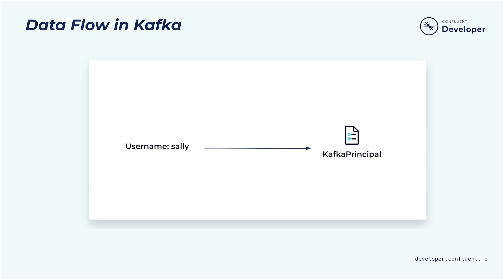Kafka uses principals to associate users with requests, even if authentication has not been configured for a connection. When authentication has not been enabled, the principal associated with the connection is anonymous. In production environments, avoid granting access to anonymous users unless the intention is to give everyone permission to access the broker — generally, this isn't a good idea.